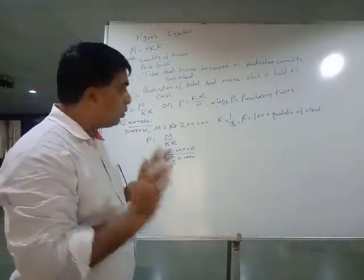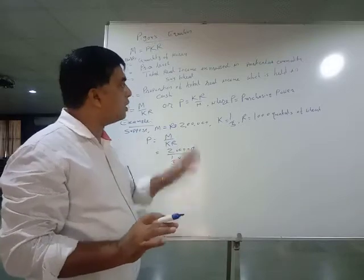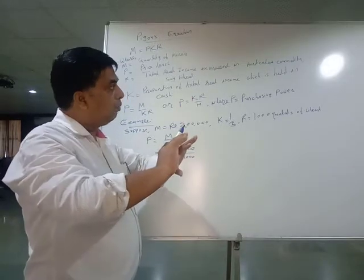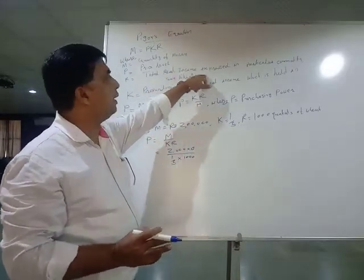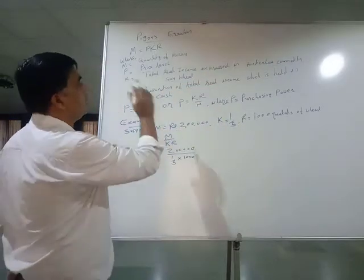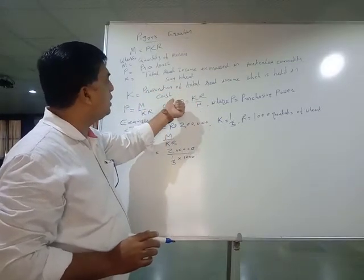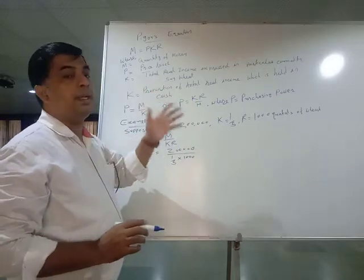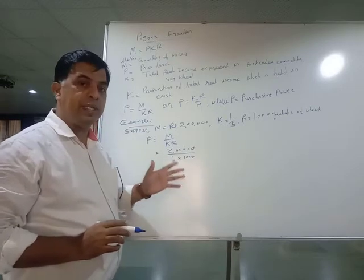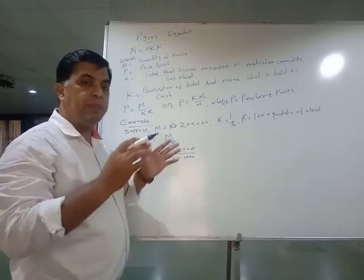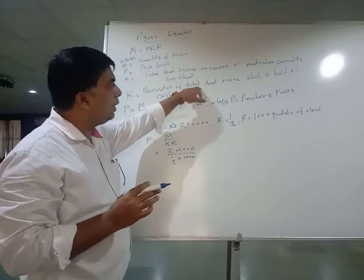As an example, total real income is expressed in terms of wheat — that is, total real resources or real income expressed in a particular commodity. K is the most important variable: it is the proportion of total real income which is held in cash. K indicates demand for money — the amount of money which people want to keep in hand.